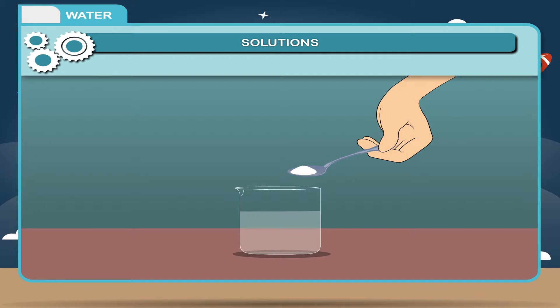A solution is a uniform mixture of solvent and solute. It is a homogeneous mixture of one or more substances dissolved in another substance.